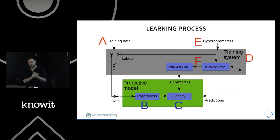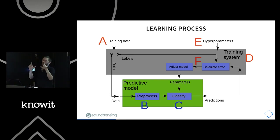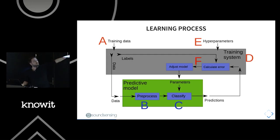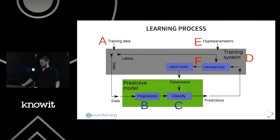The training process for supervised learning works like this: you have training data — sounds and labels — plus hyperparameters like how long a window of sound to look at per prediction. The training process can't answer that hyperparameter question itself. We pre-process the data, run it through the classifier, compute an error based on the labels, and adjust the model. This cycle repeats until the classifier is good enough to use on new data.